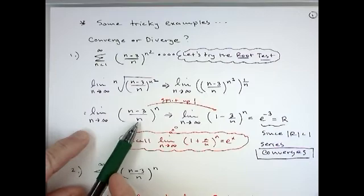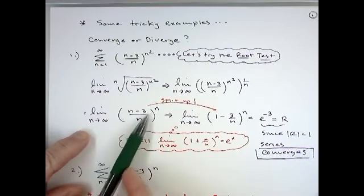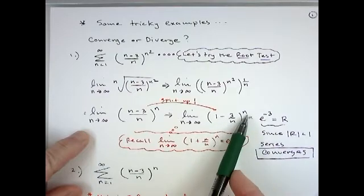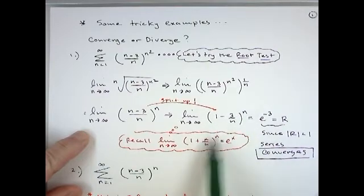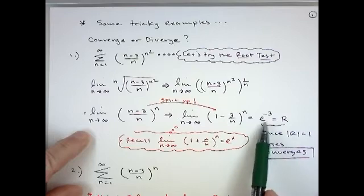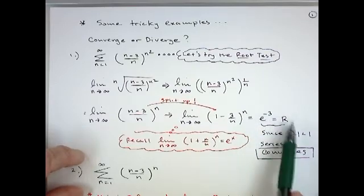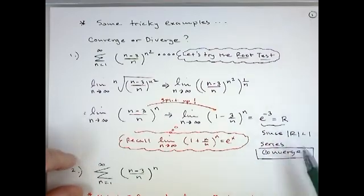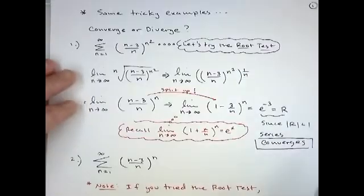So with that in mind, what you'd want to do is split this up, divide the n into both of them, to give you 1 minus 3 over n to the n. So then you can see your x value would be negative 3. So this limit would be e to the negative 3. And that would be our r value when you do the root test. Remember the requirement if the absolute value of r is less than 1, which it is, 1 over e cubed is less than 1, then our series would converge.